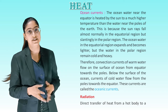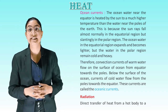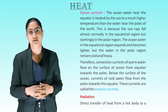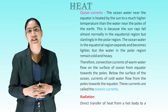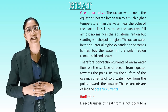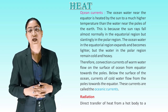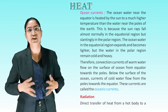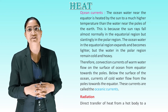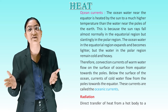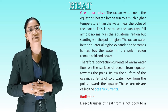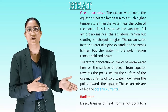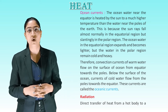Ocean currents. Ocean water near the equator is heated by the sun to a much higher temperature than water near the poles, because sun rays fall almost normally in equatorial regions but slantingly in polar regions. The equatorial ocean water expands and becomes lighter, while polar water remains cold and heavy. Therefore, convection currents of warm water flow on the ocean surface from the equator towards the poles, and below the surface, currents of cold water flow from the poles towards the equator. These are called oceanic currents.